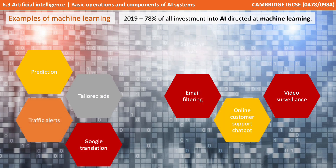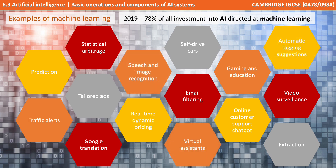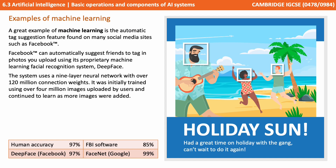Machine learning is an incredibly popular area of computer science at the moment. In 2019, 78% of all investment into AI was directed at machine learning. One great example of machine learning is the auto friend tagging suggestion feature found on many social media sites such as Facebook. It can automatically suggest friends from new photos you upload by using its own machine learning facial recognition system. Facebook's system was called DeepFace and it uses a 9 layer neural network with over 120 million connection weights. It was trained initially on over 4 million images uploaded by users and continued to learn as more images were added over time.